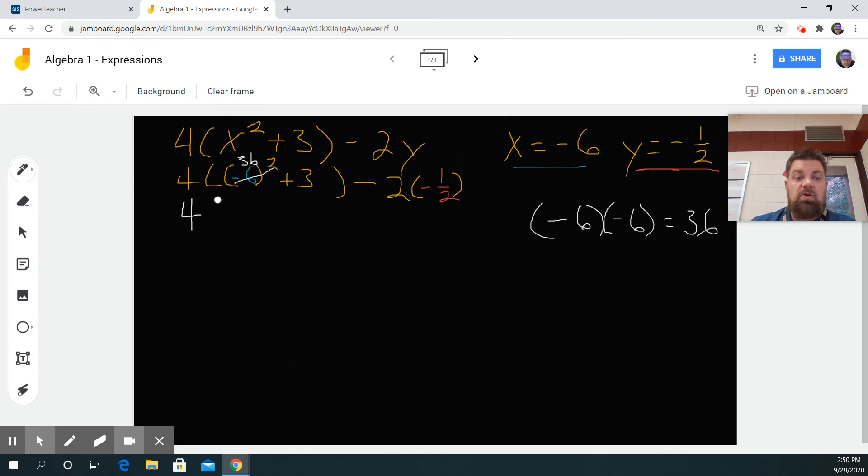So then I get 4 times 36 plus 3 is 39 minus... wait, let me think about this. What's 1/2 of 2? 1. What's a negative times a negative? A positive. So that's a positive 1.